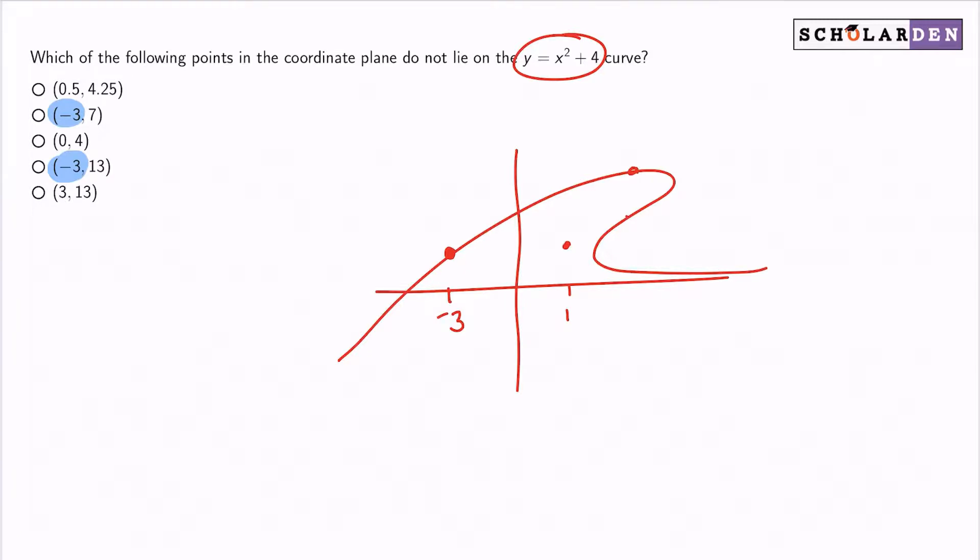And so with that said, one of those answers is incorrect. So what I'm going to do is apply x equals negative 3 into my equation and see what I get for y. So by doing this, what I'm going to see is that y equals negative 3 squared plus 4.